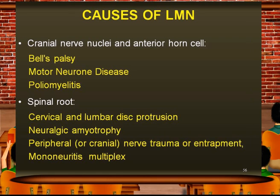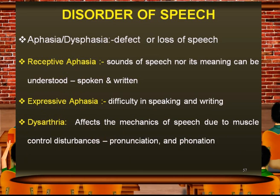Causes of lower motor neuron lesions include cranial nuclei or anterior horn cell conditions such as Bell's palsy, motor neuron disease, and poliomyelitis. Spinal roots may be affected by cervical or lumbar disc protrusions, neuralgic amyotrophy, peripheral or cranial nerve trauma, entrapment neuropathies, and mononeuritis multiplex — all of which can lead to lower motor neuron lesions.